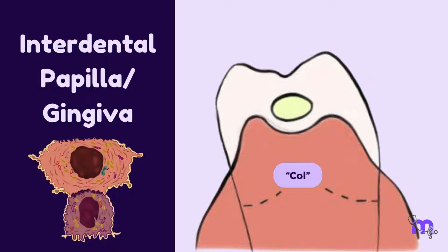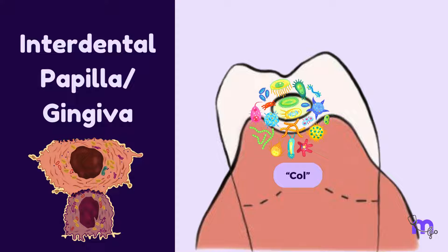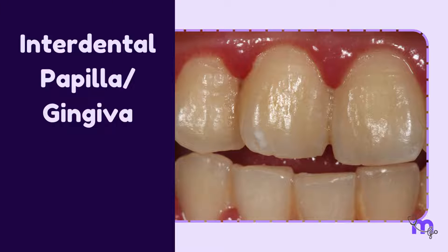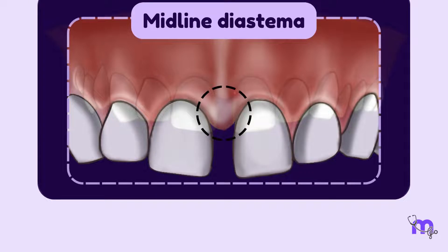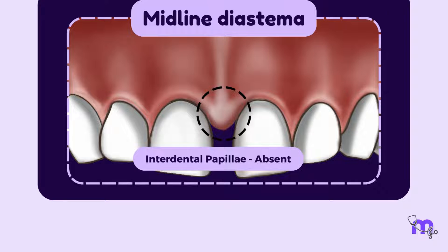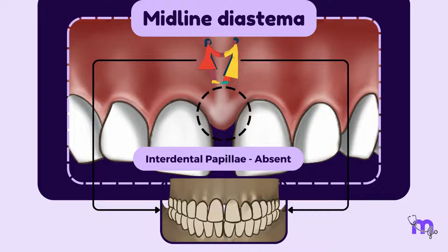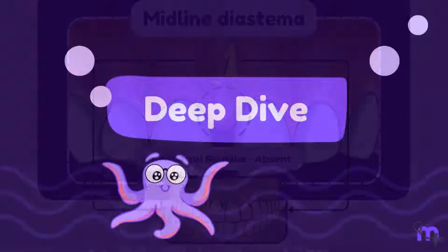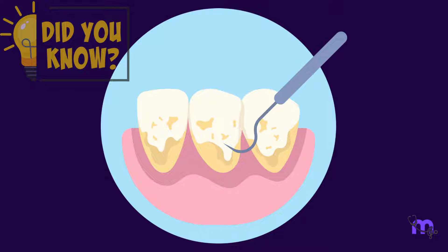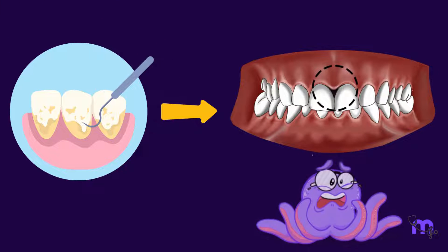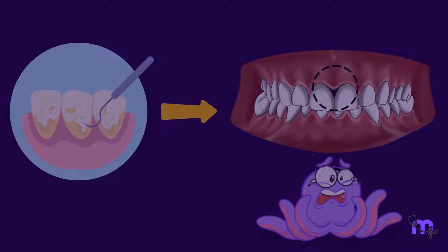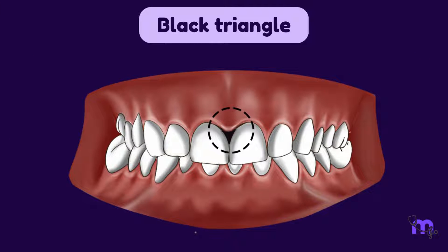The col is non-keratinized and is therefore prone to infection, which is why gingivitis typically starts in the interproximal area. When there is a diastema, the gingiva develops a smooth rounded surface devoid of interdental papillae and is tightly bonded to the interdental bone. Periodontal disease often causes loss of interdental papilla, which leads to an unaesthetic appearance, especially in the anterior teeth. These spaces are referred to as black triangles.